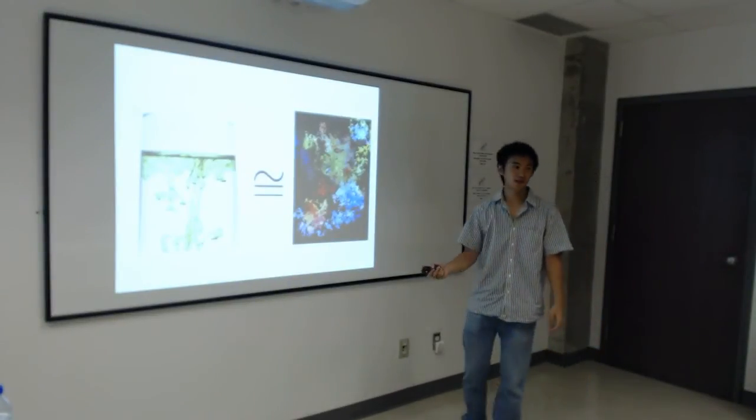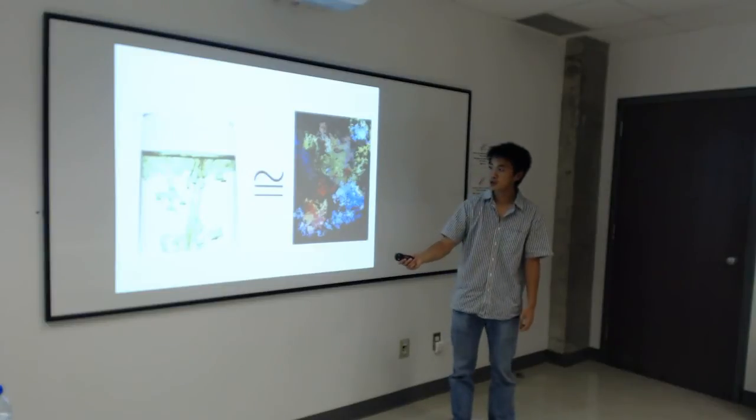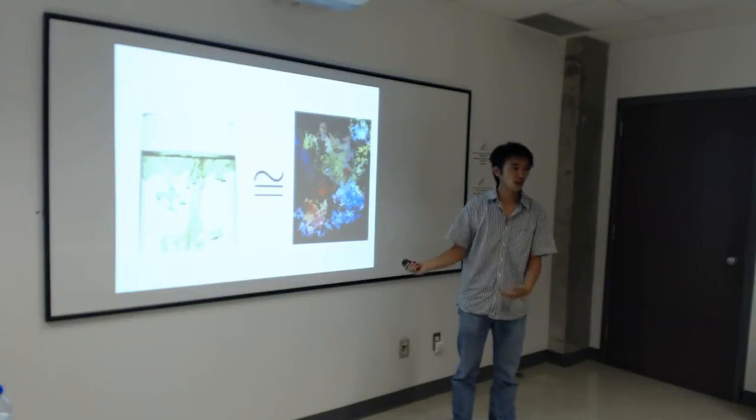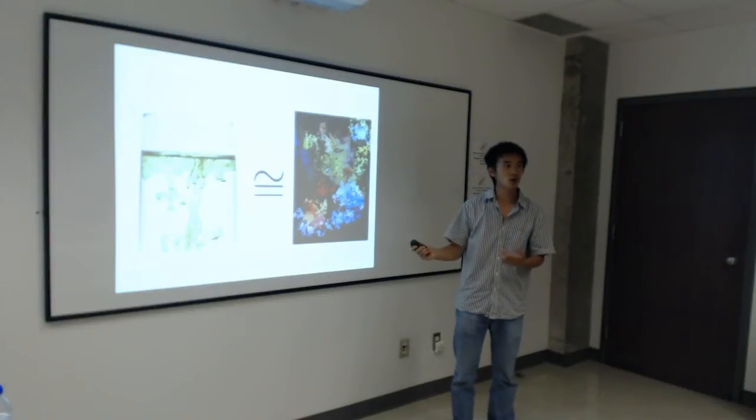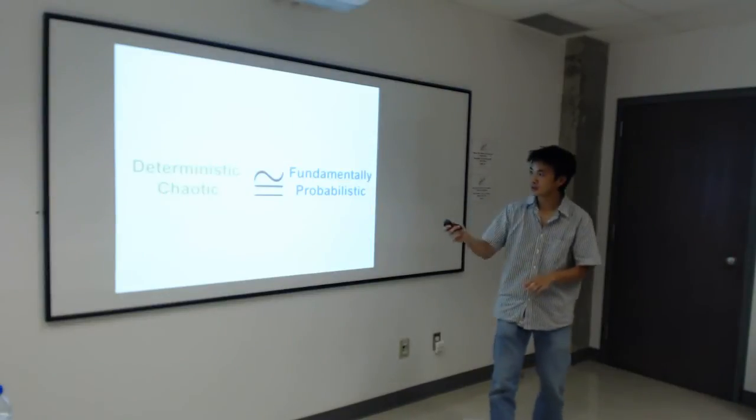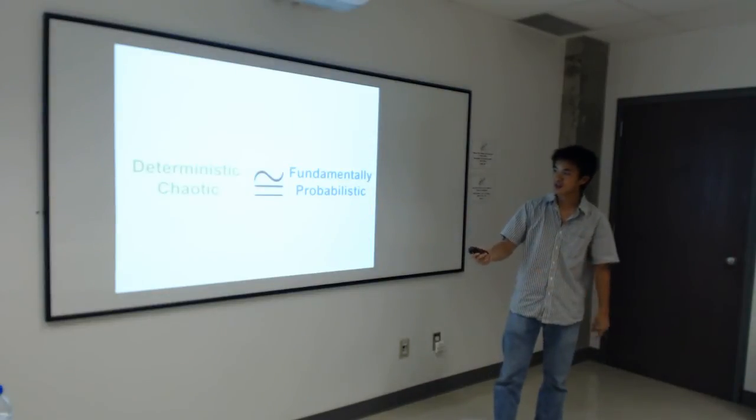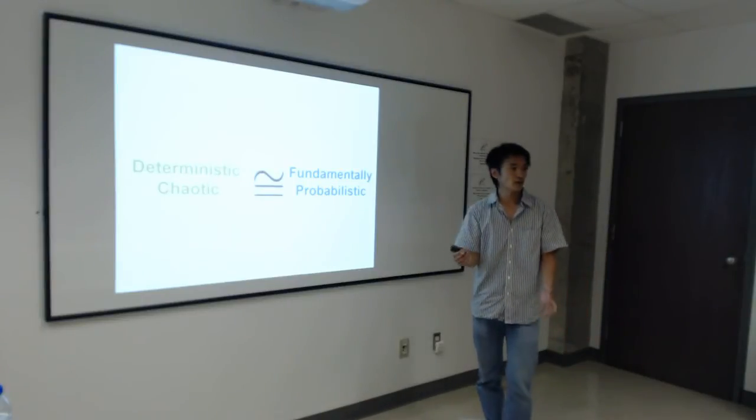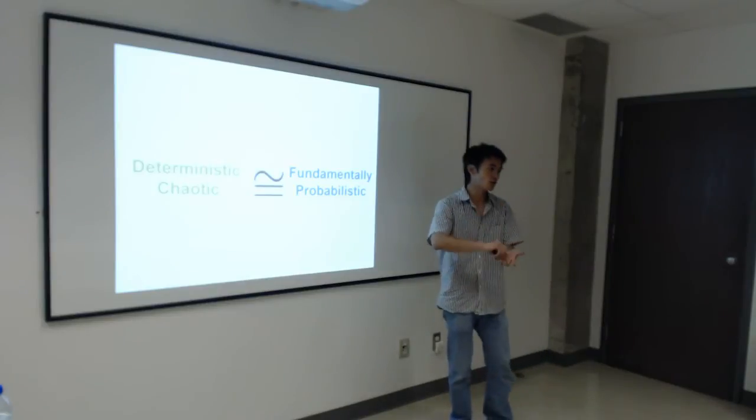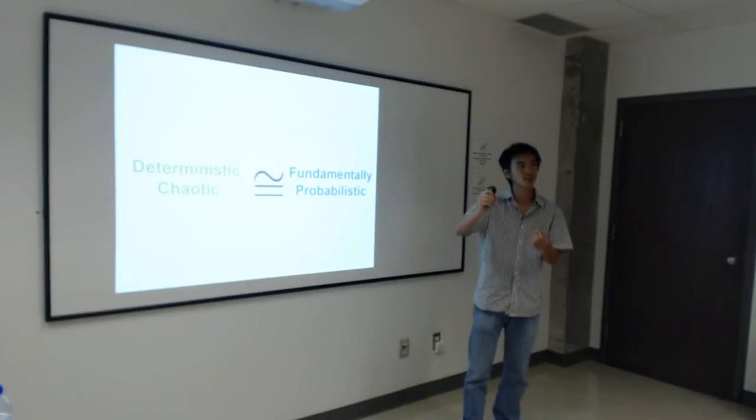Another important isomorphism in the history of science is the isomorphism between Brownian motion and random walks. If you look through the angle of algorithm theory, you see that these two are one and the same. Another one here, the isomorphism between deterministic chaos and fundamental probabilistic. Both are fundamentally unpredictable. They are isomorphic in the sense of unpredictability.